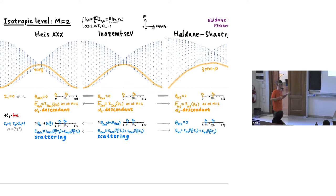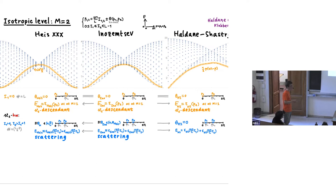Quite interestingly, when κ goes all the way to zero — the Haldane-Shastry limit — the quasi-momenta become precisely 2π/L times an integer. The model is in some sense free: the two magnons don't feel each other except for the exclusion rule that they cannot be equal or adjacent. The energy is literally the sum of the two separate energies. The scattering phase is zero for Haldane-Shastry, giving a remarkably regular and beautiful spectrum.